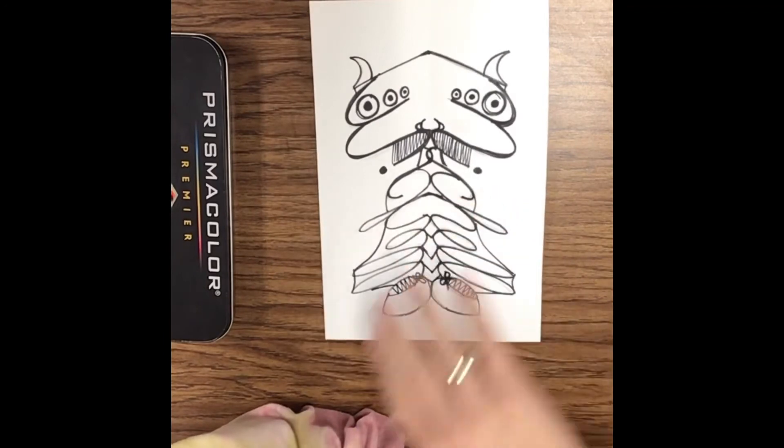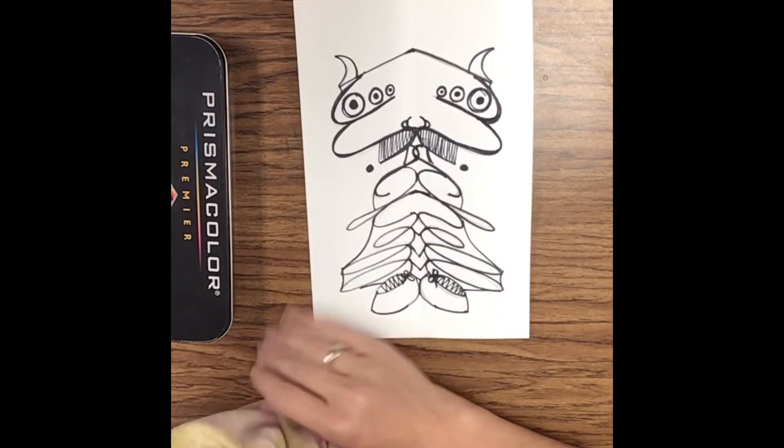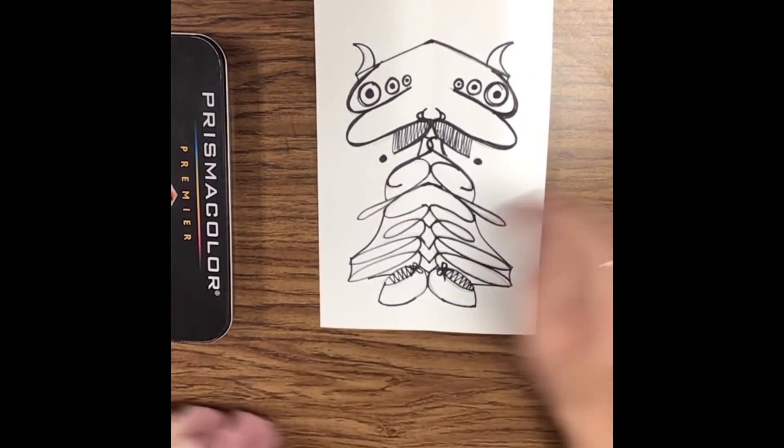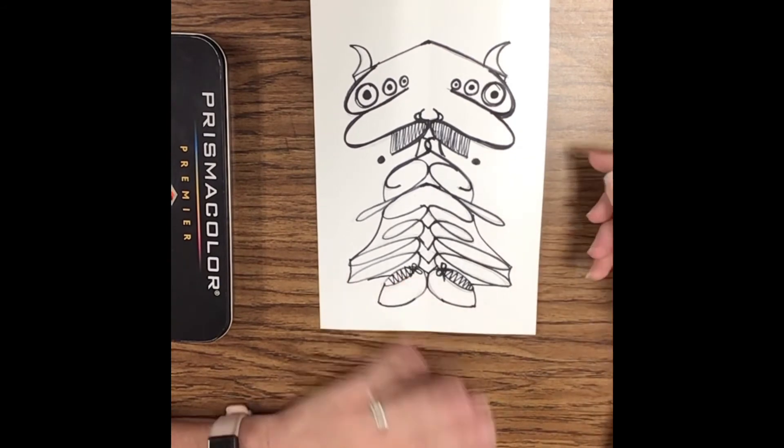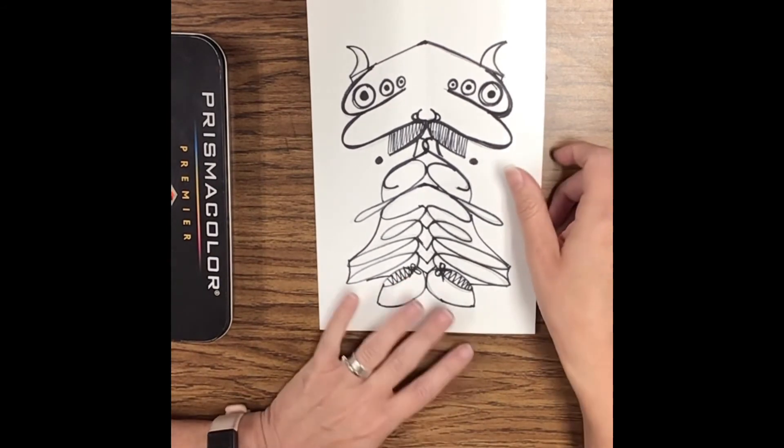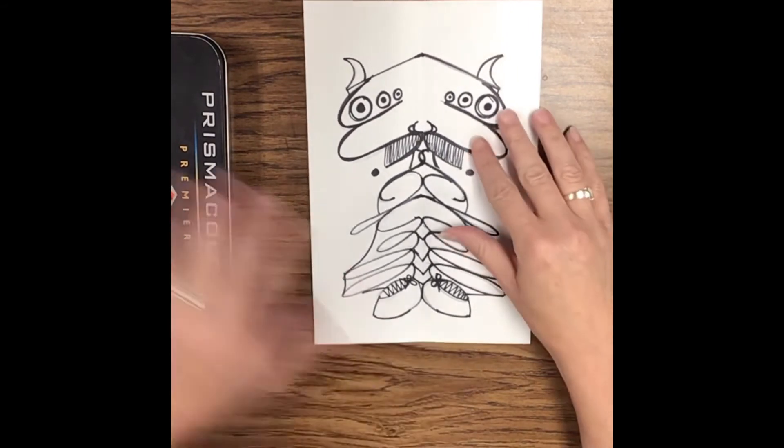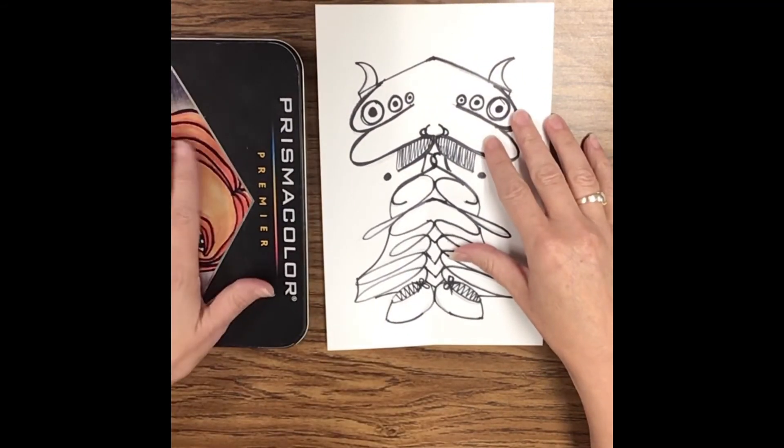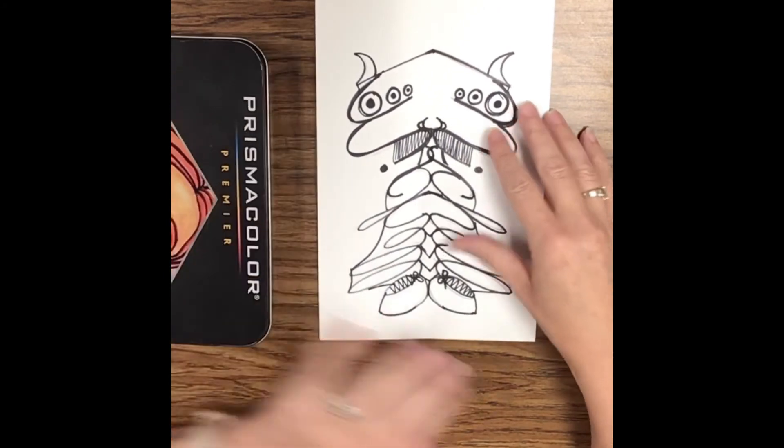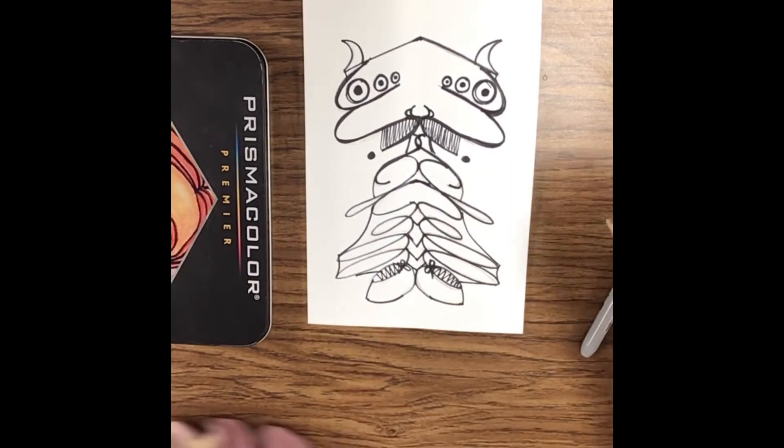Alright, I've got my little alien or monster completed. I may have a few more little details I want to add in just a little bit later, but I've got a good start on it. So now I'm gonna go ahead and use my color pencils and start getting some color on here. And we'll check back here in just a little bit.